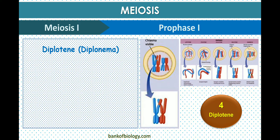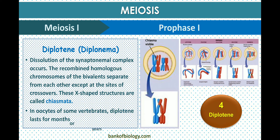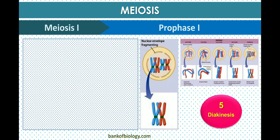The fourth sub-stage is diplotene, also called diplonema, in which dissolution of the synaptonemal complex occurs. The recombined homologous chromosomes of the bivalent separate from each other, except at the sites of crossing over. These X-shaped structures are called chiasmata. In oocytes of some vertebrates, diplotene can last for months or even years.